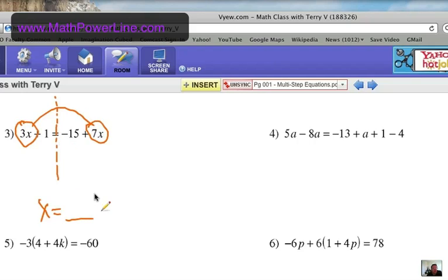Now, as you do these more and you get a lot of practice, you'll start to kind of have some preferences. But basically, I'm going to usually get all the X terms on the left. That means I need to get rid of the 7X by subtracting it or adding a negative 7X.